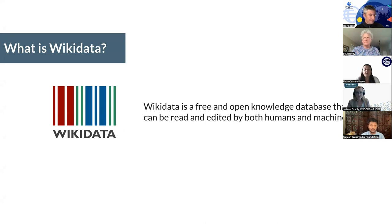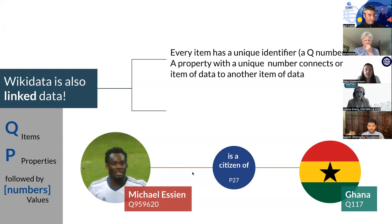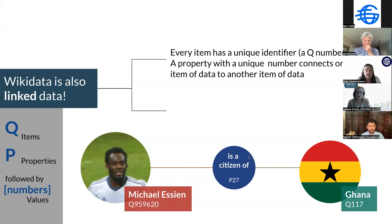Wikidata is a linked structured data database which is open for everyone to use. It's a relatively new project — it started in 2012, so almost 10 years — with about 105 million data items available on the database. On Wikidata, each item connects with a property. For example, Michael Essin is a football soccer player in Ghana. One Q item is connected by a P item on Wikidata — that's how linked data works on Wikidata.